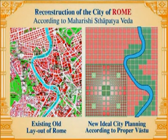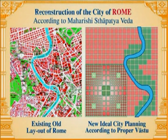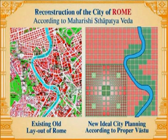In the same way, we can consider the city layout of Rome — on one side the old chaotic city planning, and on the other the reconstructed ideal city planning of Rome.